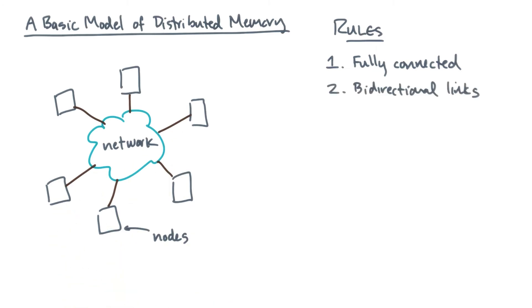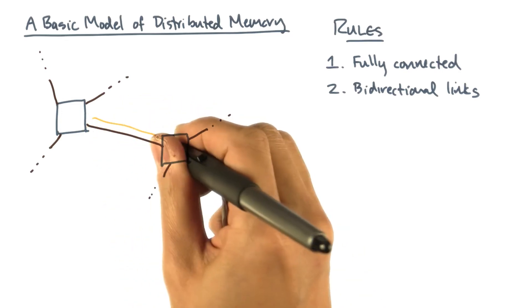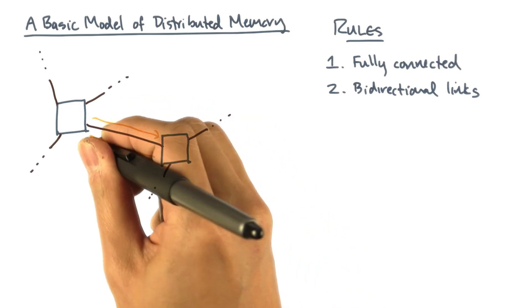The second rule is that the network links are bi-directional. What does that mean? Well, suppose I have two nodes in the machine and they're connected by a link. Bi-directional means that the link can carry a message in both directions at the same time. So while one message is going this way, another message can be going this way.